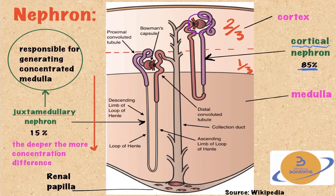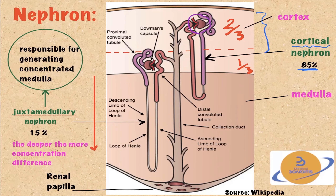In order for this regulation to take place, we require two functioning arms or two functioning mechanisms. The first is the control of the corticomedullary osmotic gradient, and the second is the control of the antidiuretic hormone release.